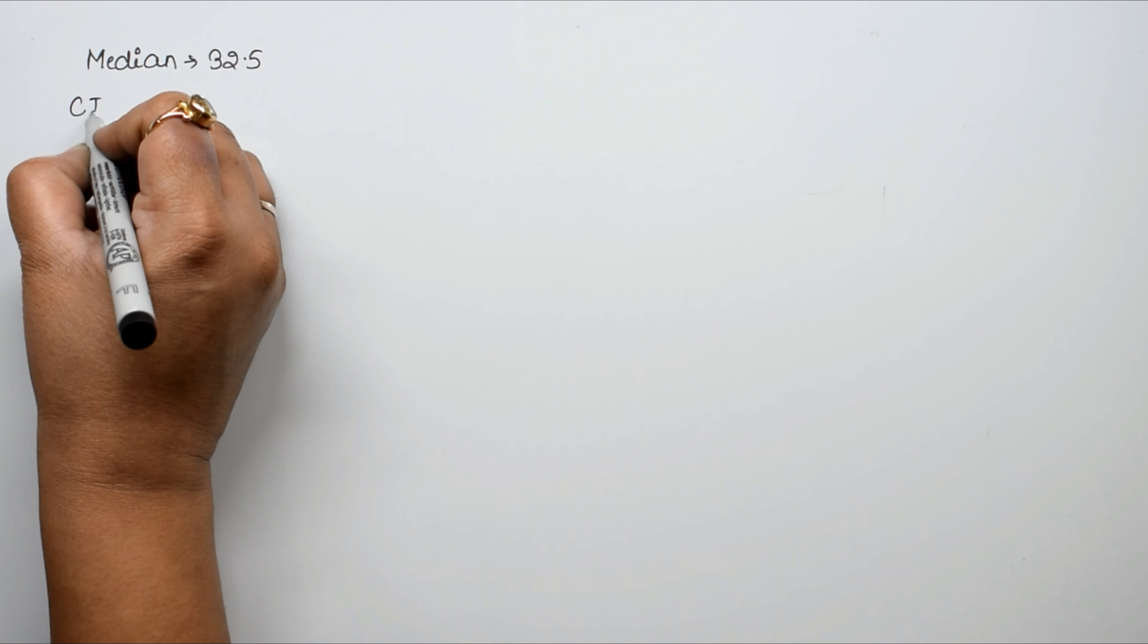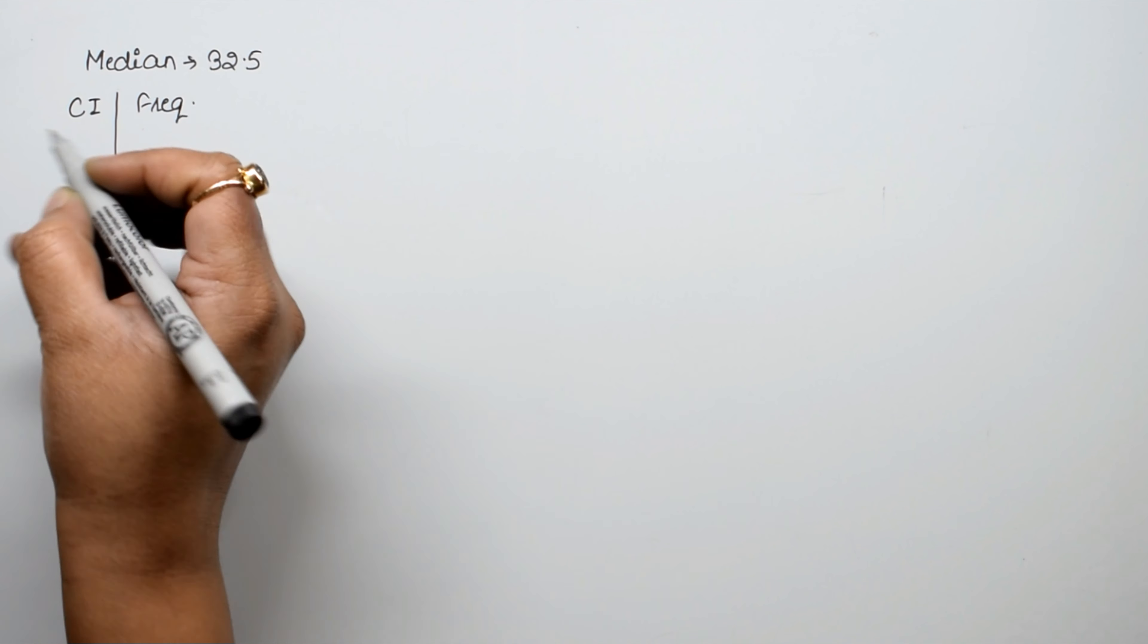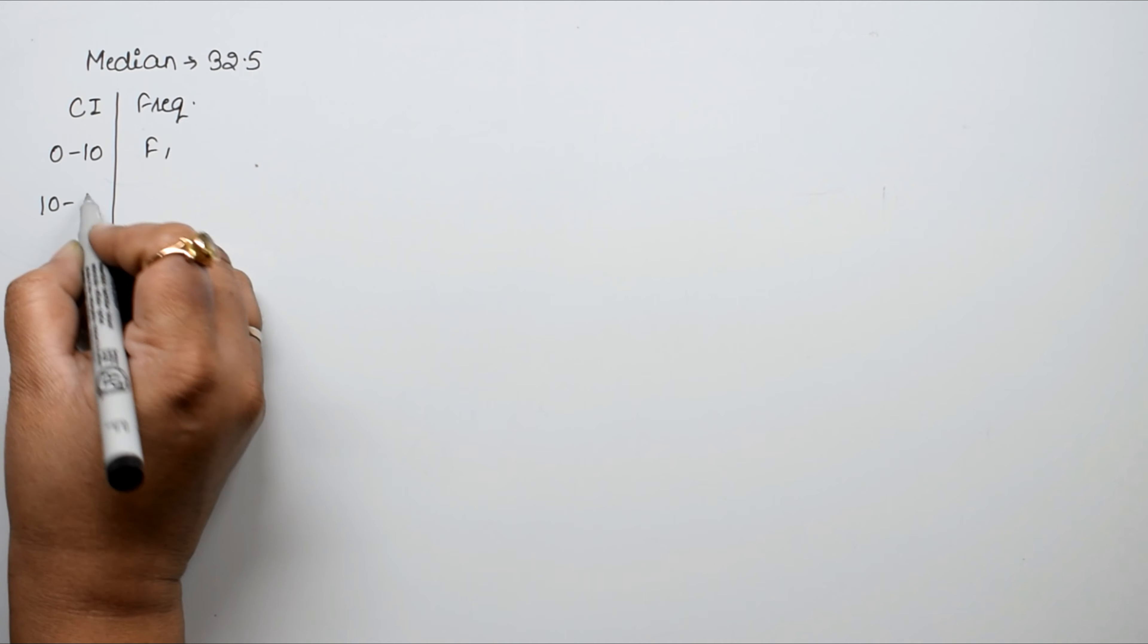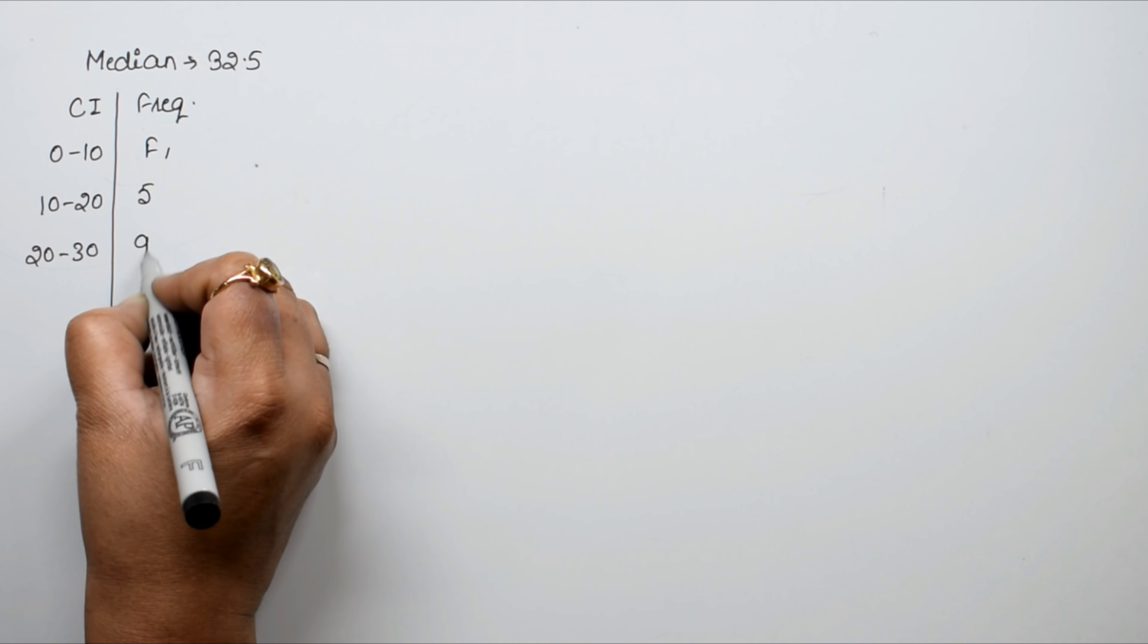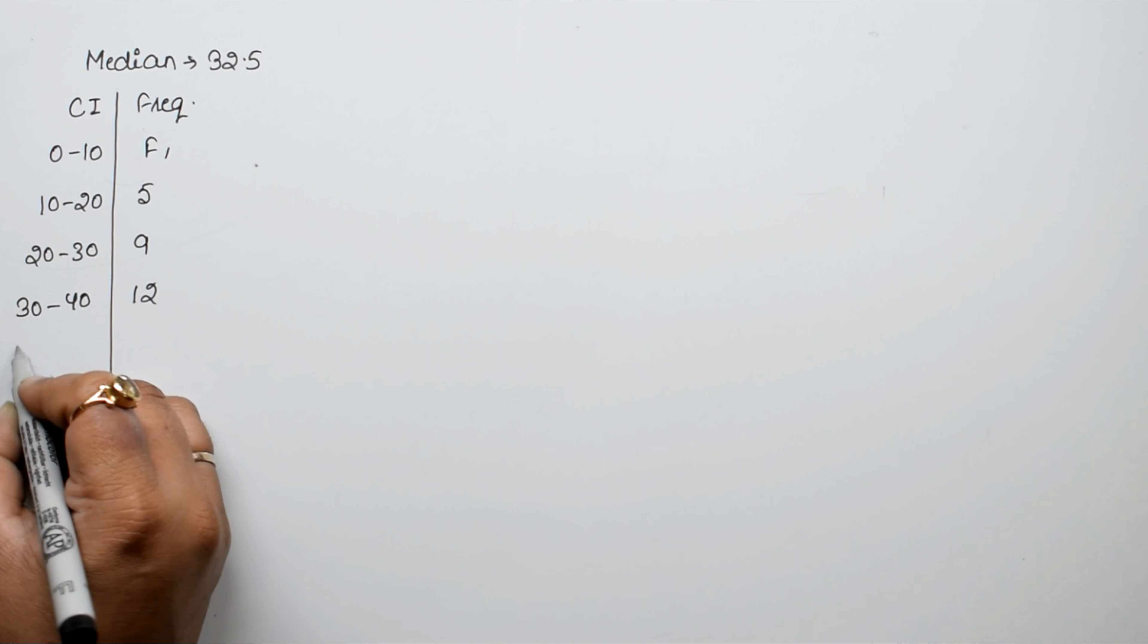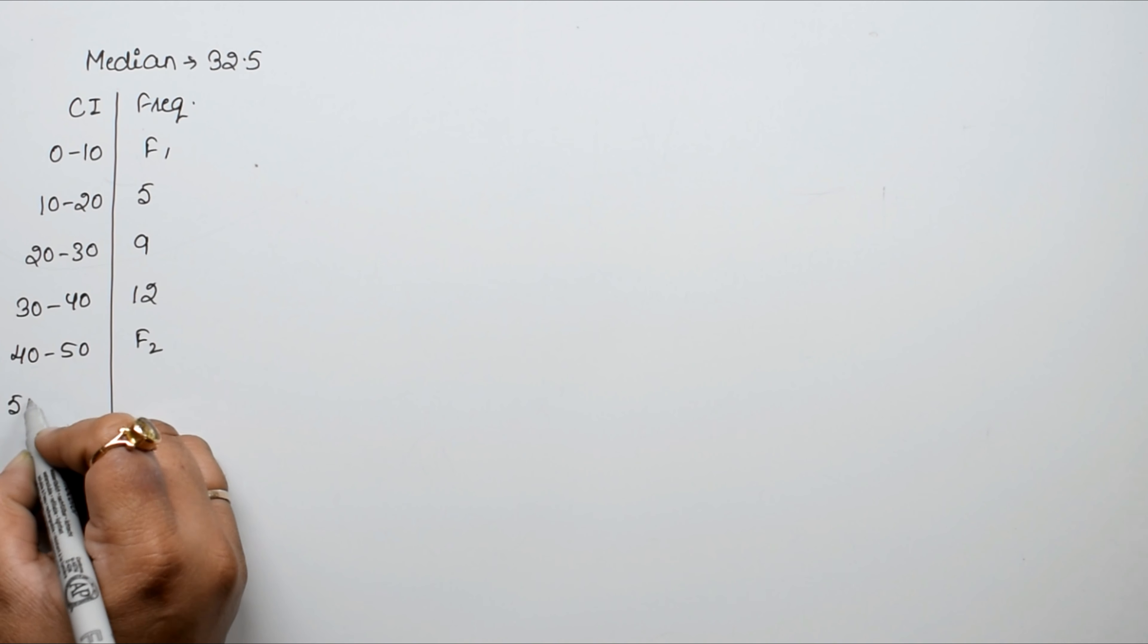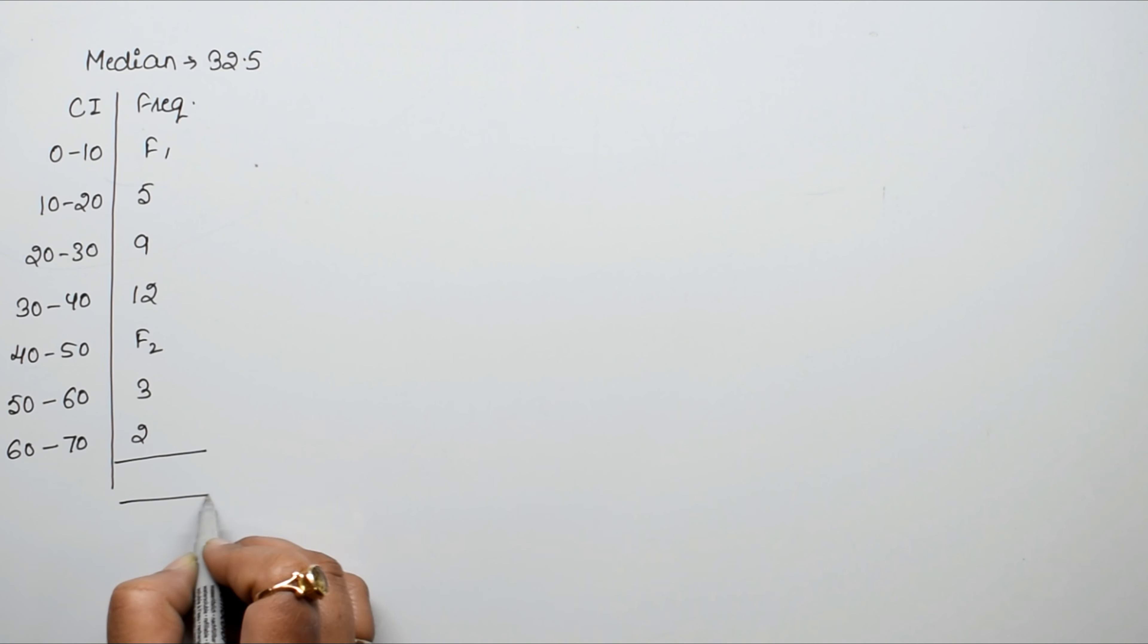We have class interval and frequency. Class interval 0 to 10 frequency is F1, 10 to 20 frequency is 5, 20 to 30 frequency is 9, 30 to 40 frequency is 12, 40 to 50 frequency is F2, 50 to 60 frequency is 3, 60 to 70 frequency is 2. And the total is 40.